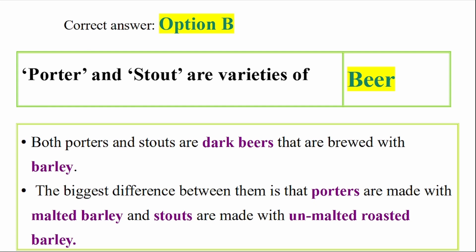The difference between porter and stout beer varieties is that porter is made with malted barley while stouts are made with unmalted roasted barley. Porter and stout are both varieties of beer.